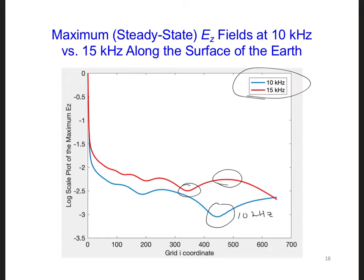By the way, another benefit of switching frequencies is that we can then unambiguously identify which transmitter is sending the signal, assuming we know what frequency each transmitter is operating at at any given moment in time.